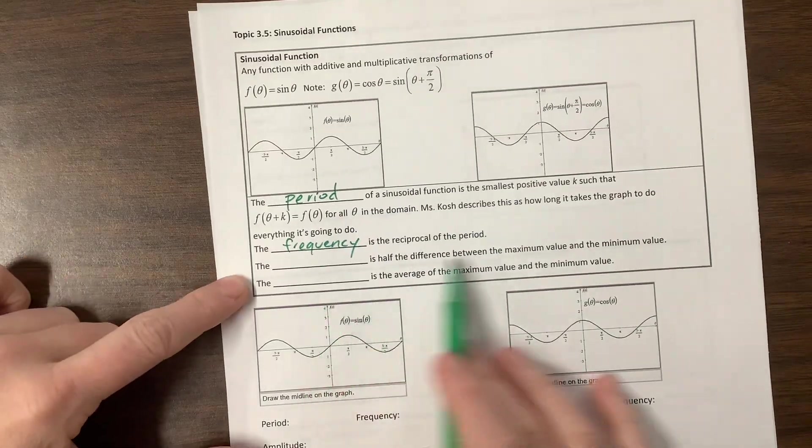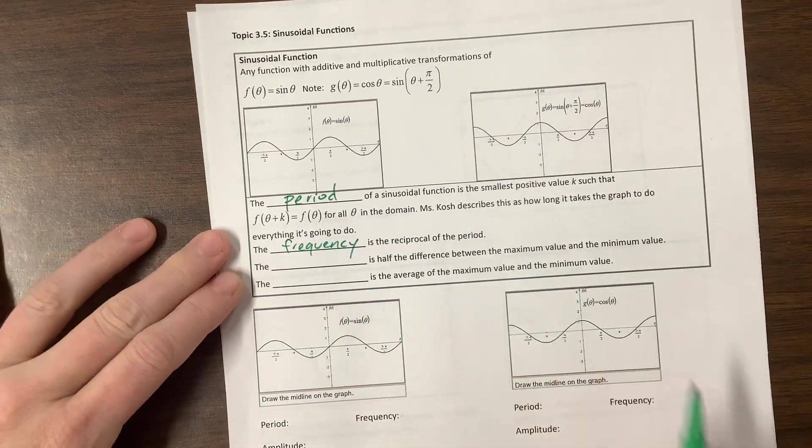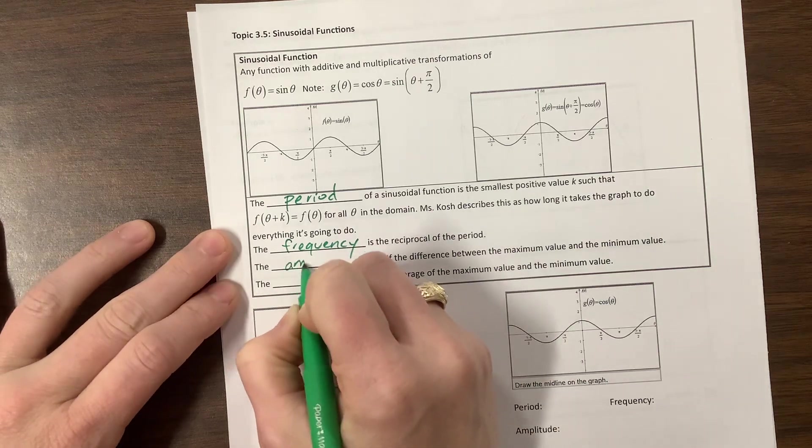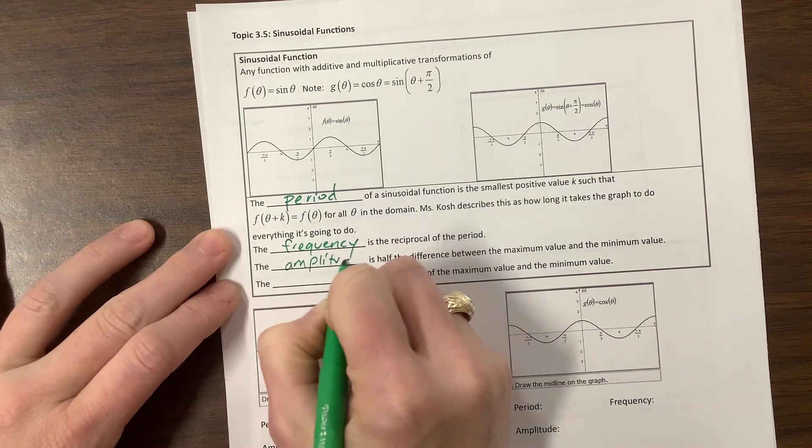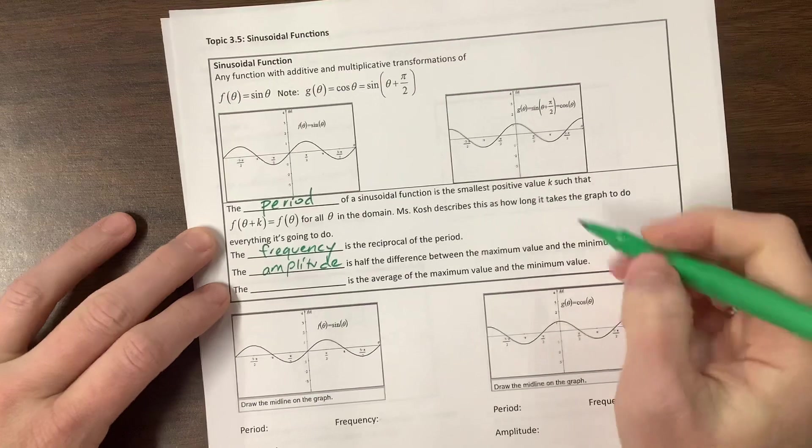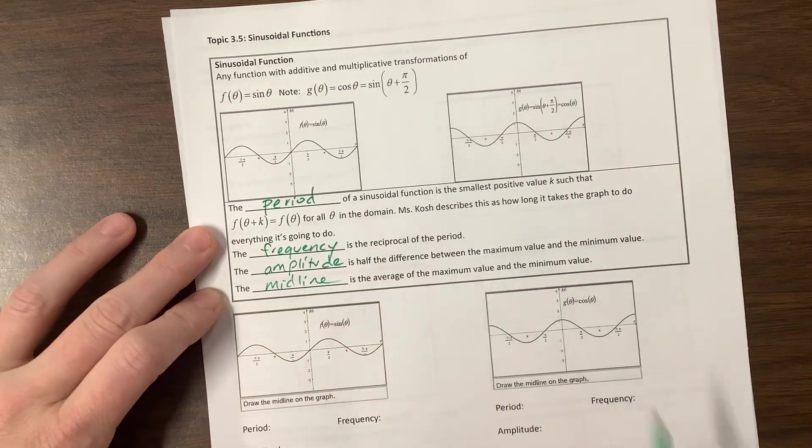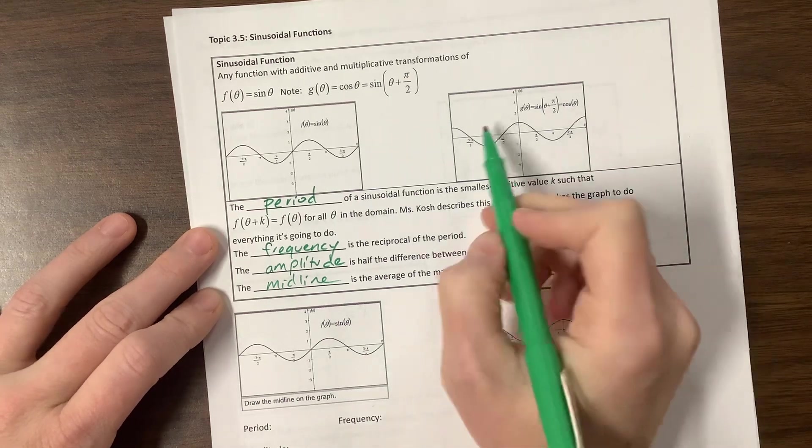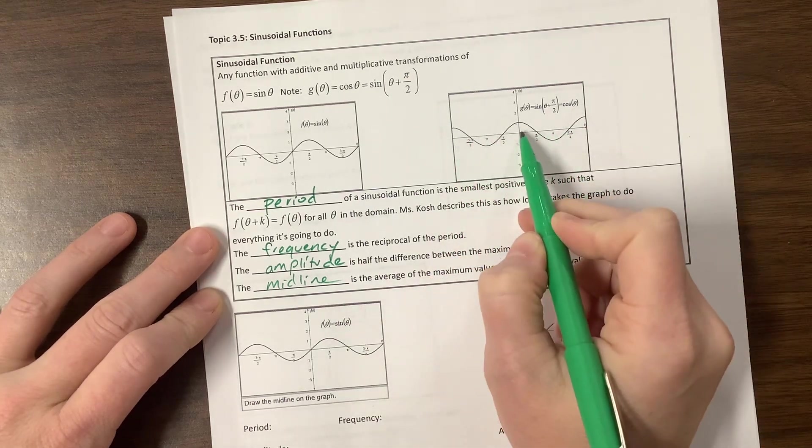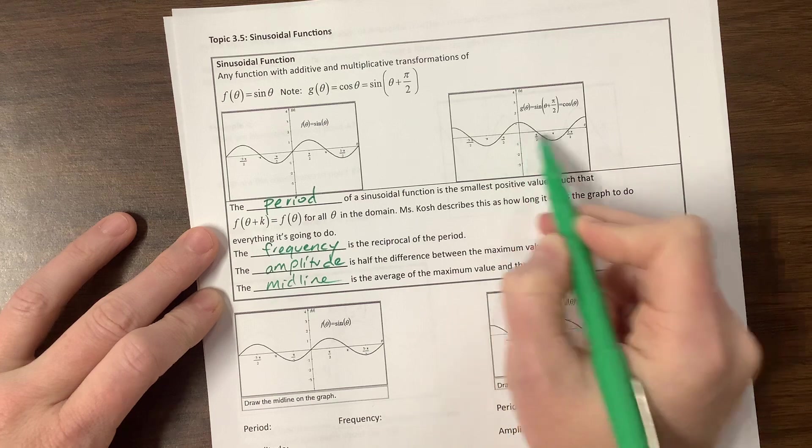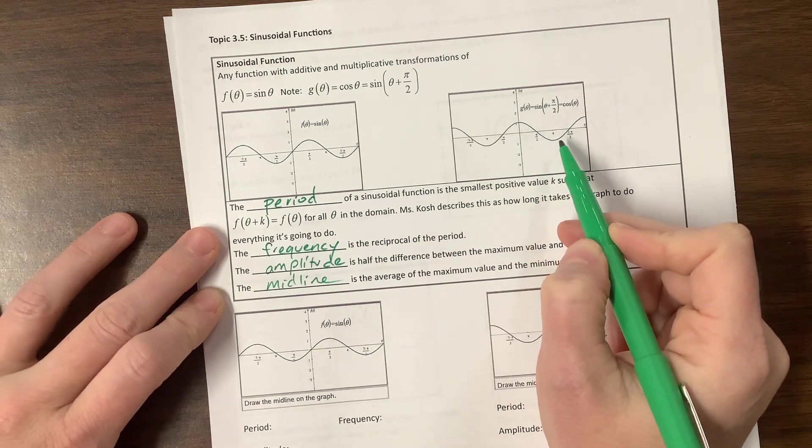The amplitude is half the distance between the maximum value and the minimum value. The midline is the average of the maximum value and the minimum value. So this midline right through here, the amplitude is how high did we go above, and then likewise, how far down did we go below.